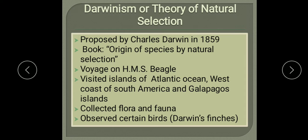Darwin observed certain birds at the Galapagos Islands, now known as Darwin's finches. These finches were noticeably different from the finches of South America, and also different from each other, having beaks of different shapes and sizes, adapted for feeding on completely different diets. We will study this in more detail in the next part of the chapter. First, we will study the main postulates of Darwinism.